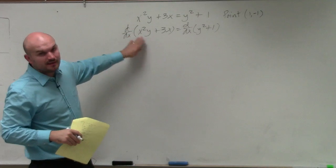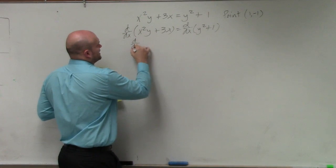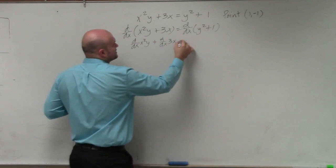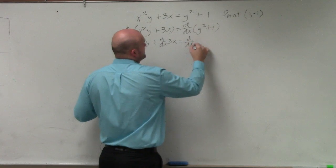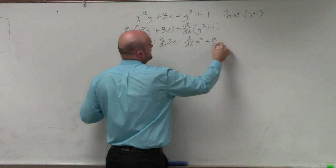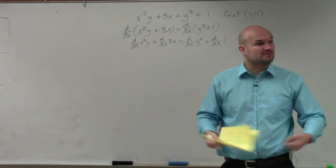I'm going to need to take the derivative of both of these terms. So I have d/dx of x²y plus d/dx of 3x equals d/dx of y² plus d/dx of 1. Remember, d/dx is basically saying taking the derivative with respect to x.